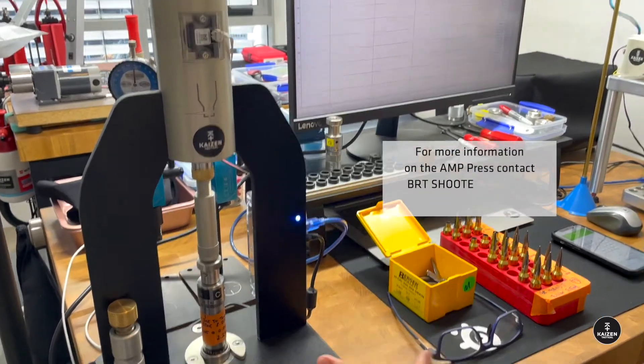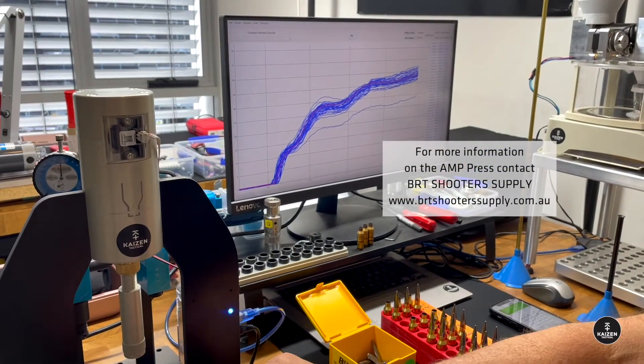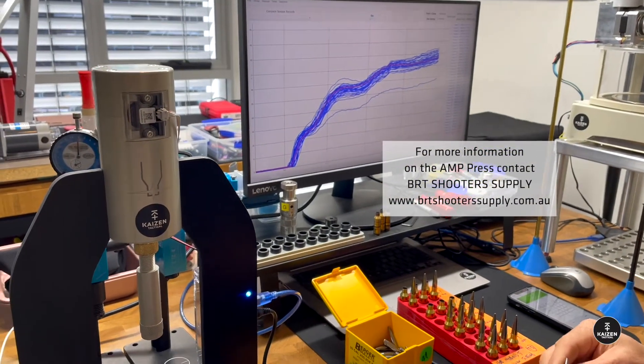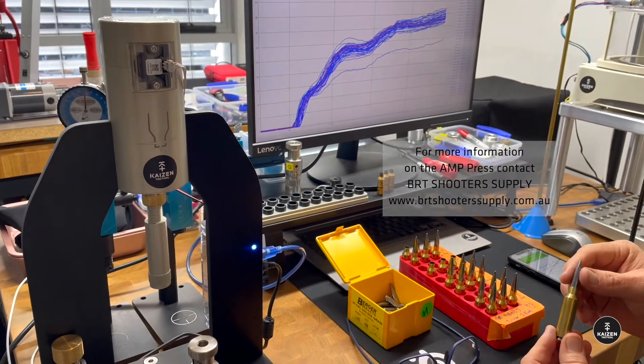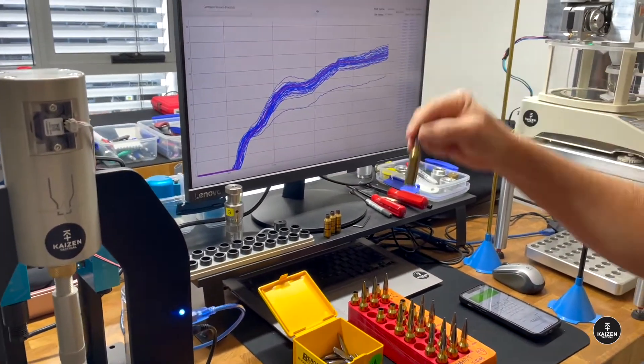This thing is just an awesome piece of kit. You'll have to see BRT Shooter Supplies to buy yourself one of those. There it is. There's the red seat line. We're all good.